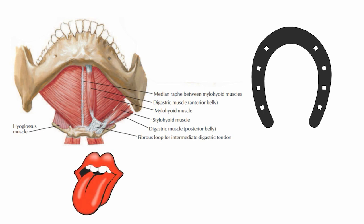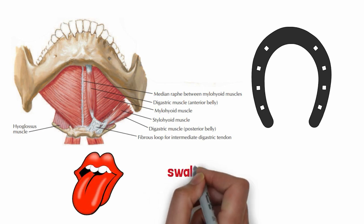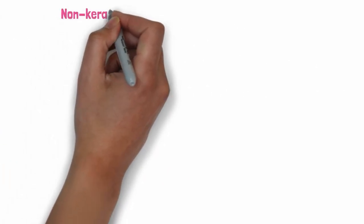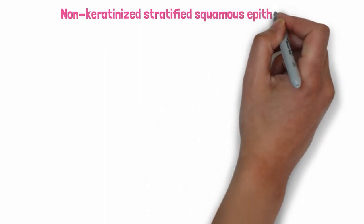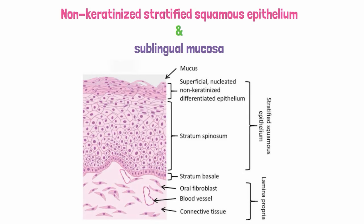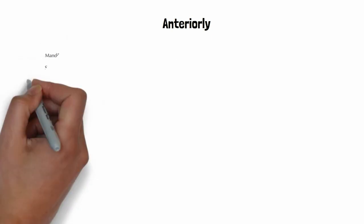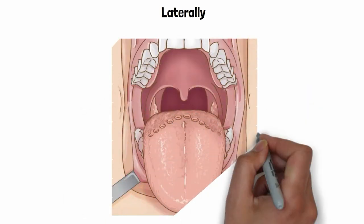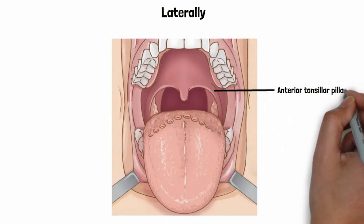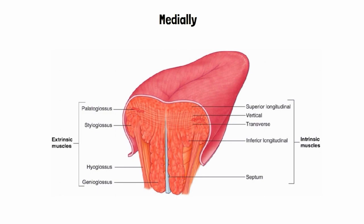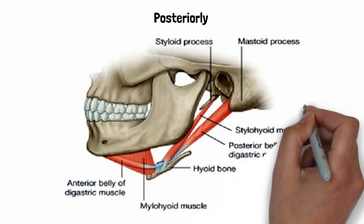It acts as the base on which the tongue rests and performs a vital role in swallowing, speaking and many other significant functions. The floor of the mouth is covered by a non-keratinized stratified squamous epithelium and the sublingual mucosa. Anteriorly, it is bound by the lingual surface of the mandible, laterally by the anterior tonsillar pillars, while medially by the muscles of the tongue, and posteriorly by the anterior belly of the digastric muscle and the hyoid bone.